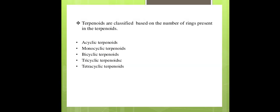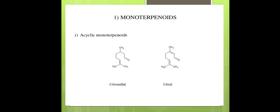Terpenoids are also classified based on the number of rings present: acyclic terpenoid, monocyclic terpenoid, bicyclic terpenoid, tricyclic terpenoid, and tetracyclic terpenoid. For example, citronellol is an acyclic monoterpenoid — it has a carbonyl group but no ring system. Citron, present in lemon, is another example of an acyclic monoterpenoid.